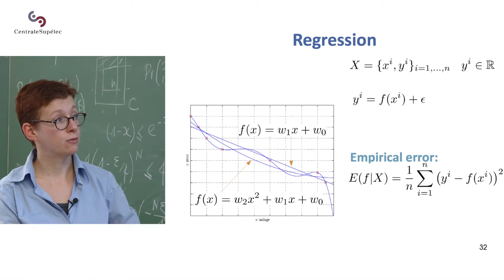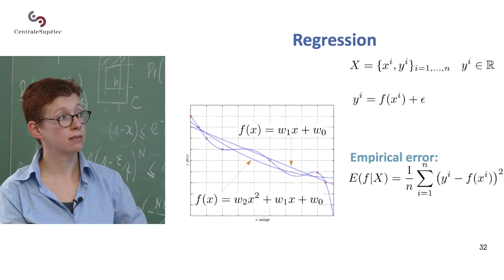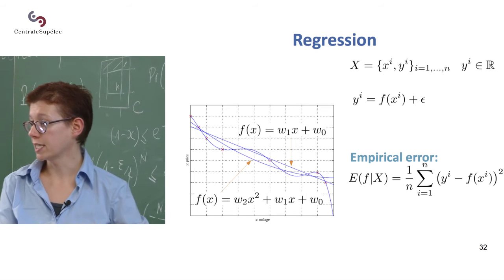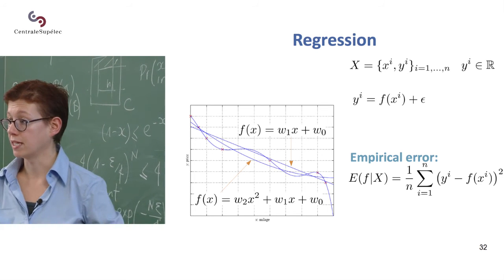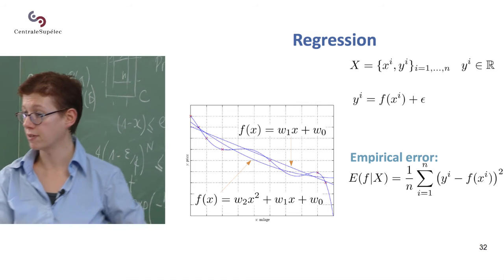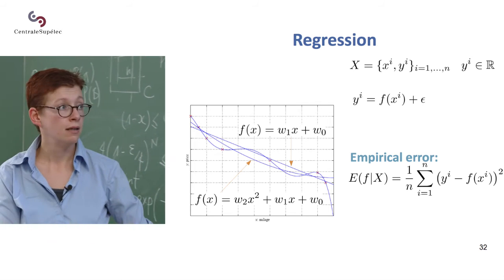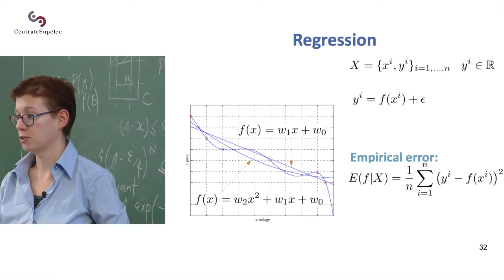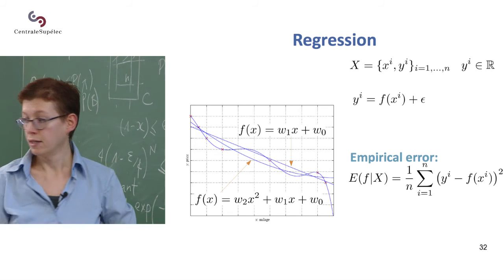So for each data point, you compute the difference between the true value and the one you predicted and then you square it so that everything is positive and then you add all those things and probably you average them because you don't want to have a bigger error just because you have more points.